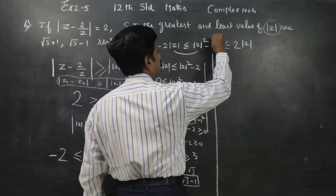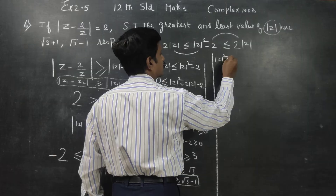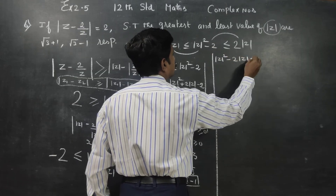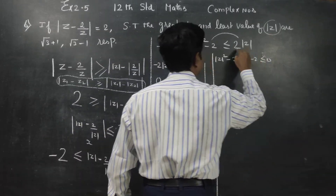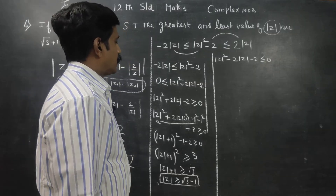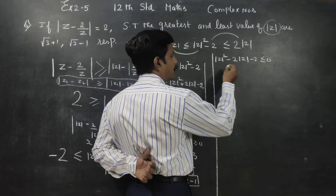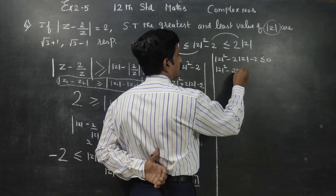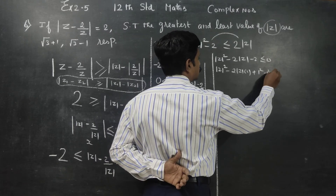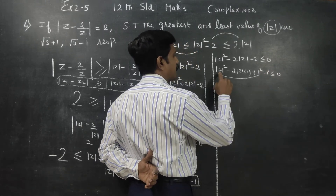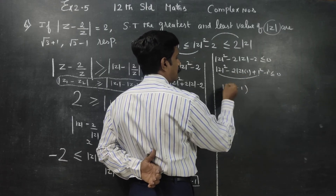Now case 2: modulus of z squared minus 2 modulus of z minus 2 is less than or equal to 0. Again applying the completing the square method — a squared minus 2ab plus b squared equals a minus b whole square — we get modulus of z minus 1 whole square minus 1 minus 2 is less than or equal to 0.